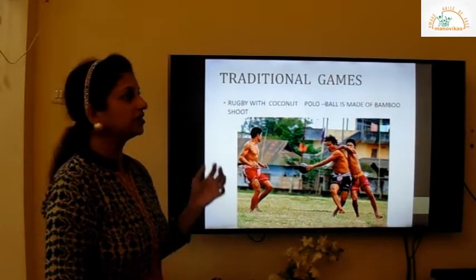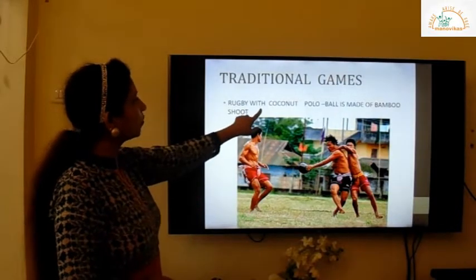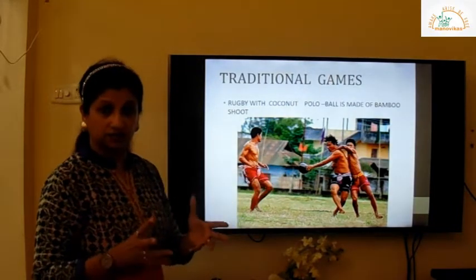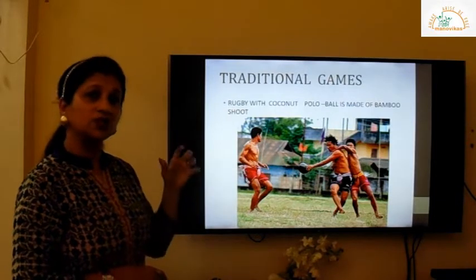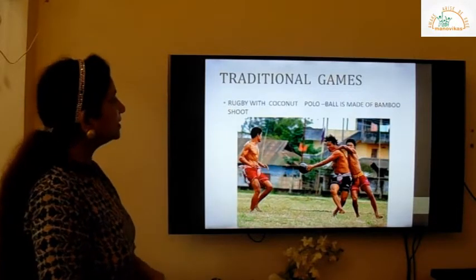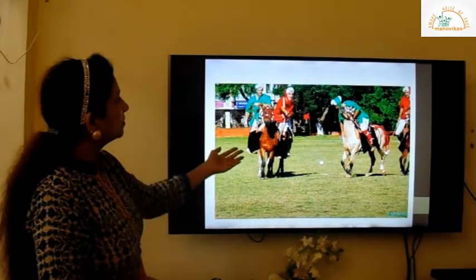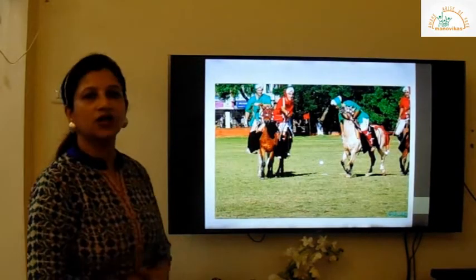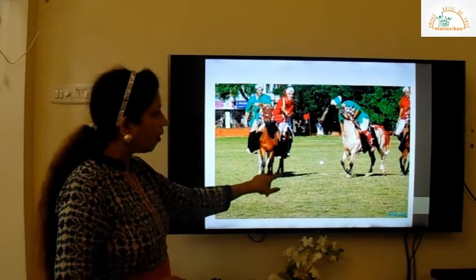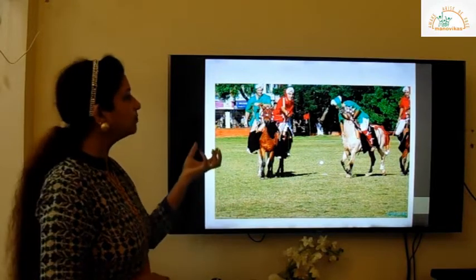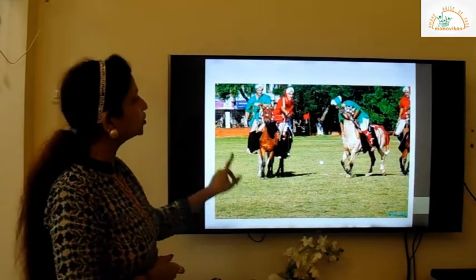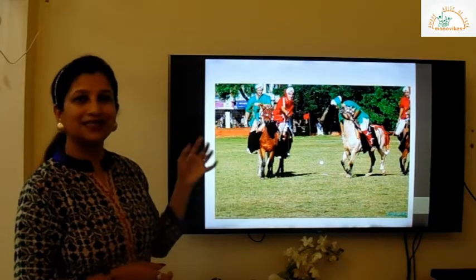The traditional games include rugby with a coconut. You can see people playing rugby with a coconut — in the earlier days, this was the traditional game of Manipur. Next is polo, a game played on horseback using a stick and a ball. The ball used earlier was made out of bamboo shoot — that is the traditional polo.